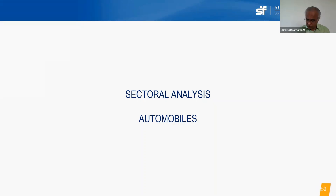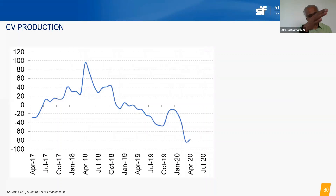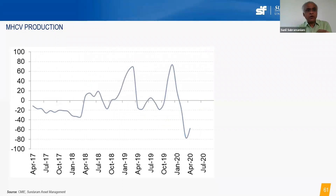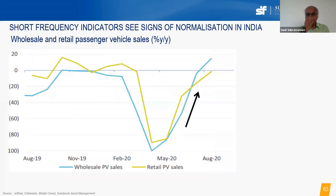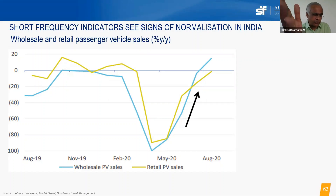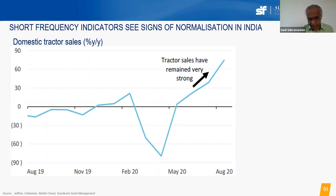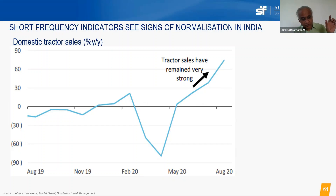Within consumption, the auto sector is another heavyweight. Commercial vehicle sales have seen a deep, continuous slowdown — medium, heavy, and light commercial vehicles alike — indicating that freight movement doesn't support new production; existing capacity is adequate. This is a negative sign in the economy. However, on the sales side, wholesale and retail passenger vehicle sales have shown a V-shaped recovery, and tractors on the back of strong agriculture have remained very strong with a sharp uptick.